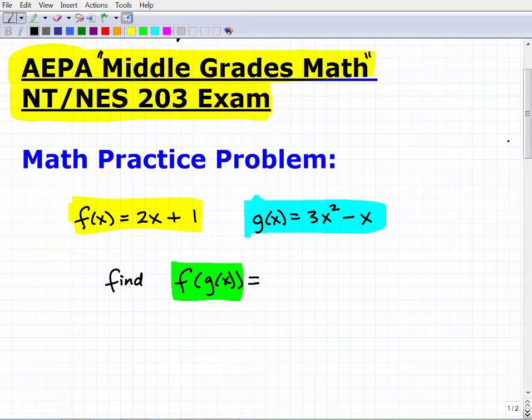What we have here are two functions: f(x) = 2x + 1, so this is one function, and then another function g(x) = 3x² - x. What I want you to do is find the composite function f(g(x)). Very common—this is what we call function operations.